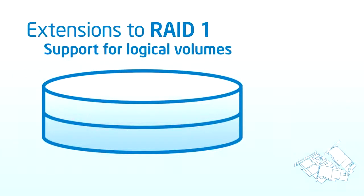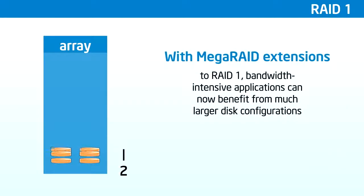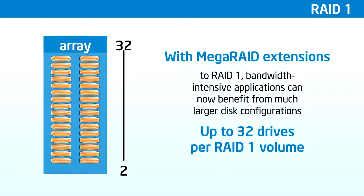One advantage of the LSI MegaRAID RAID 1 algorithms utilized by Intel RAID is a technology called Tier Reads. During heavy read loads, the controller will load balance the read request between both mirrored drives, enhancing overall read performance. Traditional RAID 1 allows configuration of only two hard drives, and RAID 10 configurations of up to 16 drives. With MegaRAID extensions to RAID 1, bandwidth-intensive applications can now benefit from much larger disk configurations. New enhancements allow up to 32 drives per RAID 1 volume, improving overall system capacity and storage performance.